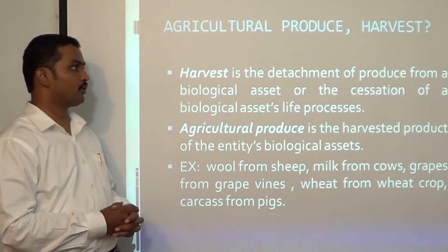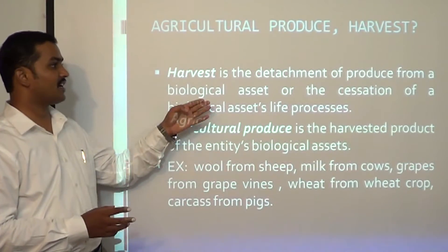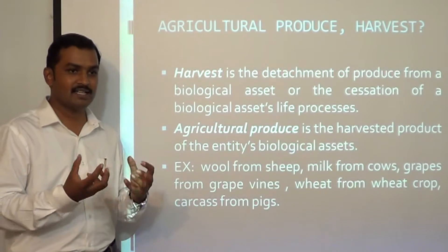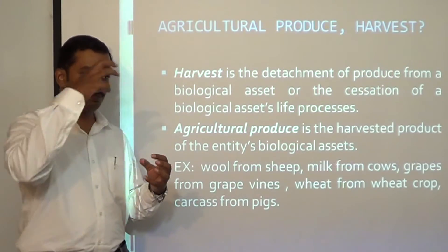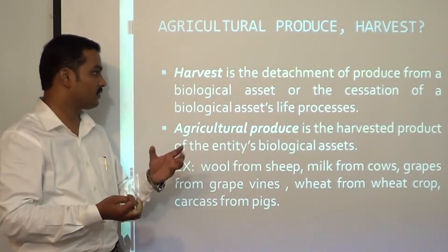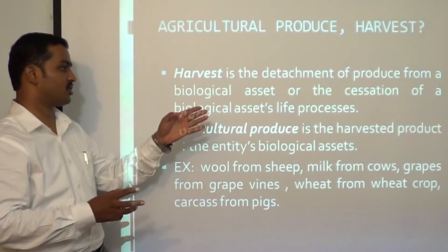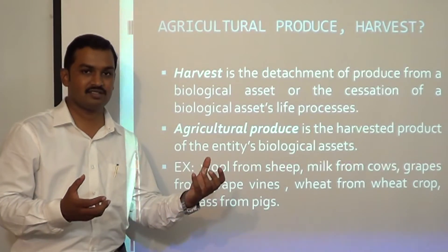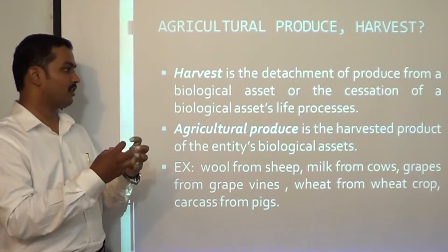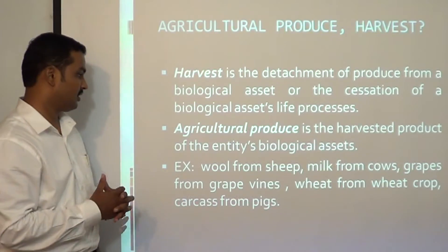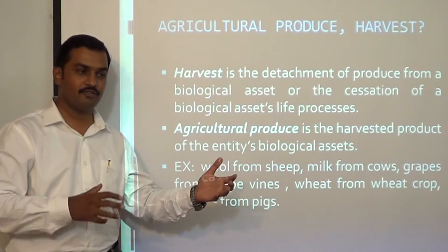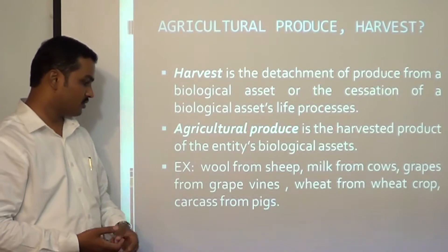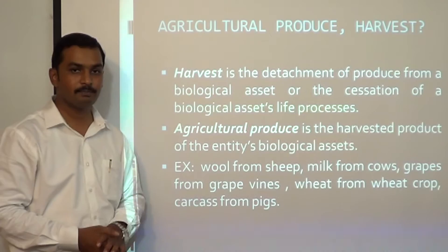Agricultural produce and harvest: harvest is the detachment of produce from a biological asset — for example, picking fruits from apple trees or a palm grove. It can also mean cessation of a biological asset's life processes, such as killing a pig, which gives you carcass as agricultural produce. Agricultural produce is whatever harvest you get from the biological asset: wool from sheep, milk from cows, grapes from grapevines, wheat from wheat crop, carcass from pigs.